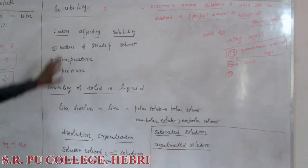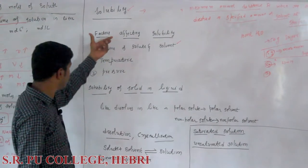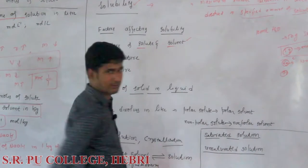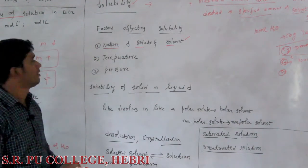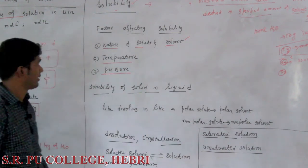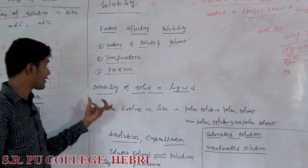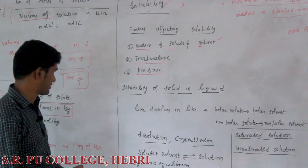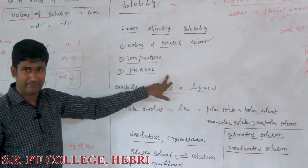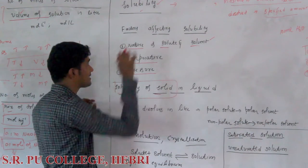The solubility of any substance depends upon various factors. Mainly there are 3 factors which affect solubility: first, the nature of solute and solvent; second, temperature; and third, pressure. Let us discuss how these 3 factors affect the solubility of solids in liquids.